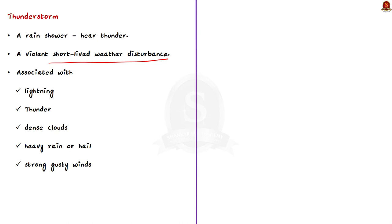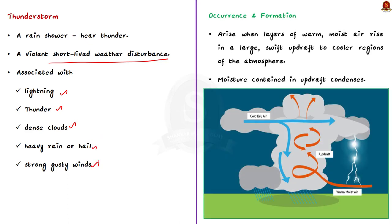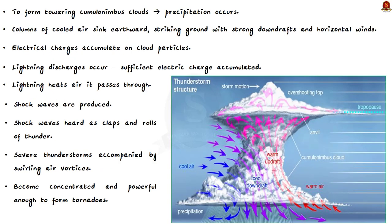A thunderstorm is almost always associated with lightning, thunder, dense clouds, heavy rain, and strong or gusty winds. Now, when does it occur and how does a thunderstorm form? Thunderstorms arise when layers of warm moist air rapidly rise to the cooler regions of the atmosphere. There, the moisture contained in the rising warm air condenses to form large cumulonimbus clouds, and eventually precipitation occurs. Also note that while warm moist air is rising upwards, columns of cooled air sink earthward. Once this cooled air reaches the earth, it moves in the horizontal direction as strong winds.